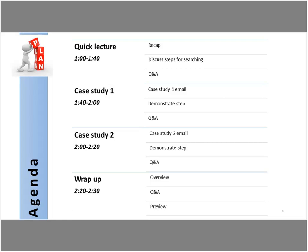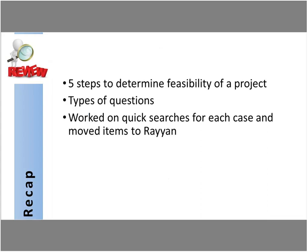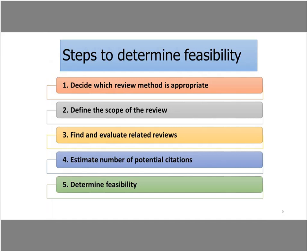Quick recap of what we did last time. We looked at that first interview with a client and the steps to determine if that project is feasible. We also looked at the different types of questions that a systematic review addresses, and I had questions about Rayon so we'll touch on that briefly.